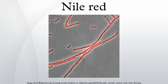Nile red stains intracellular lipid droplets red. In most polar solvents Nile red will not fluoresce; however, when in a lipid-rich environment it can be intensely fluorescent.